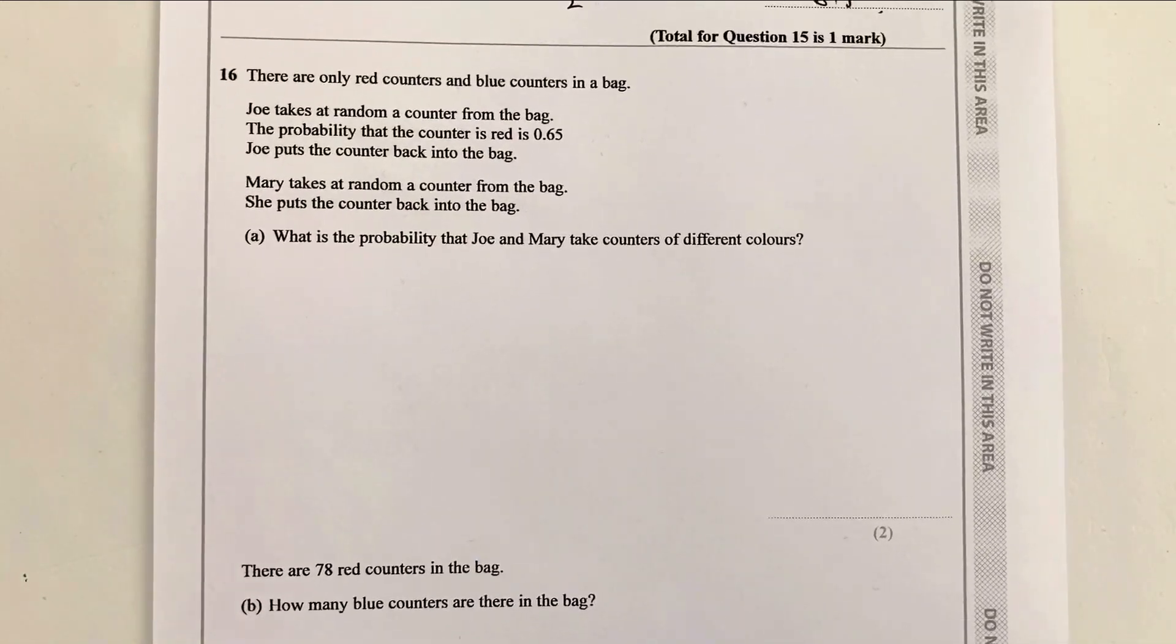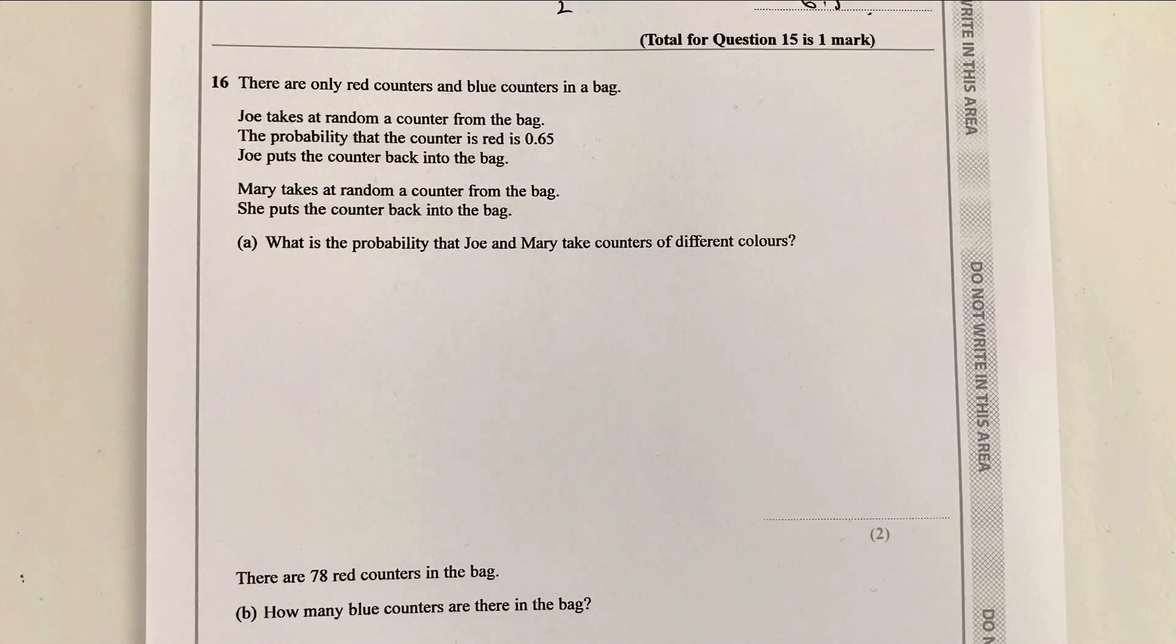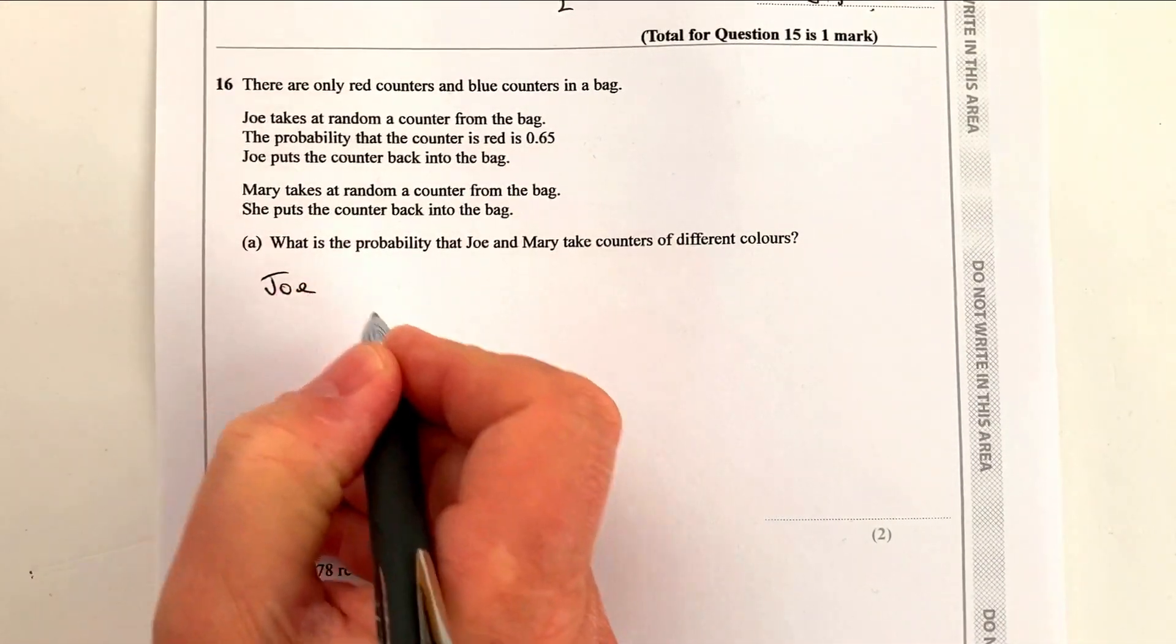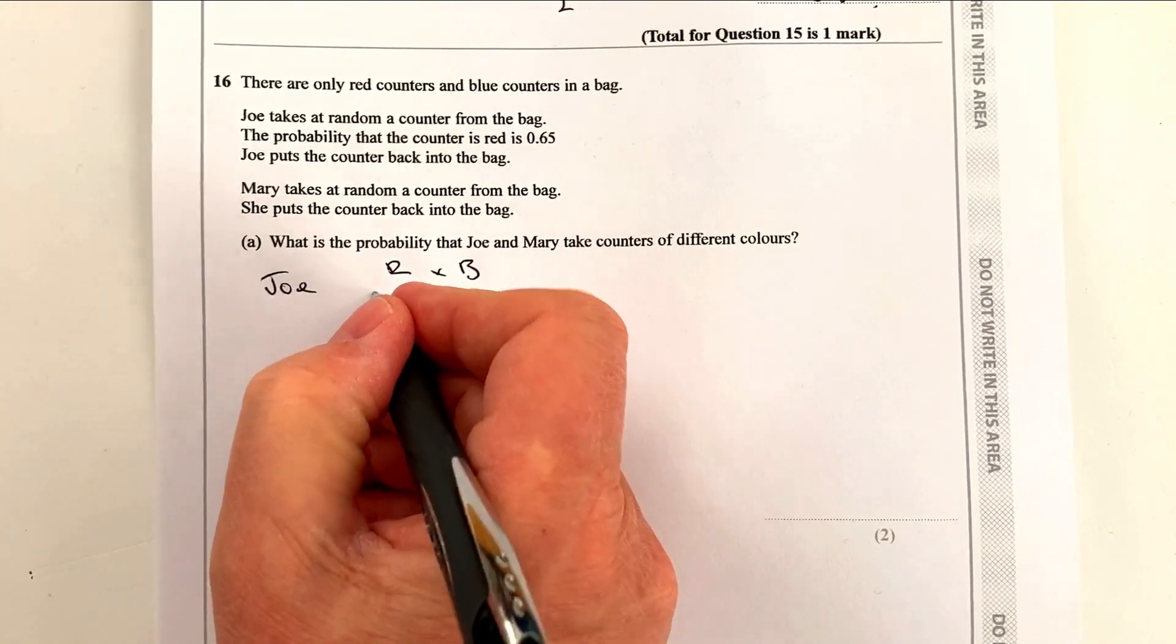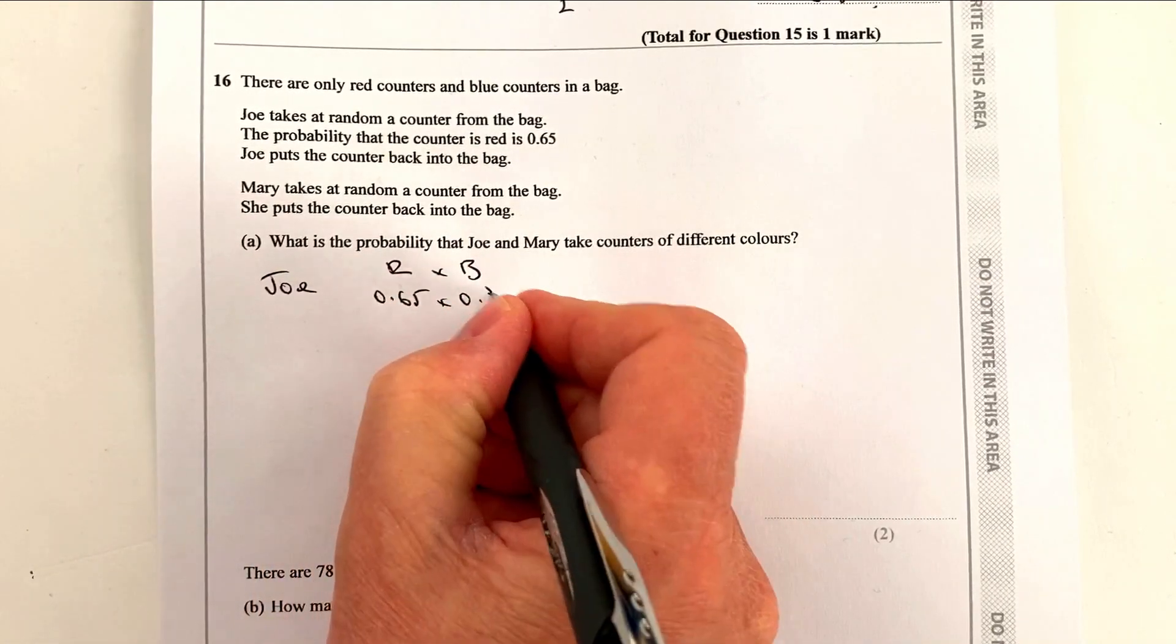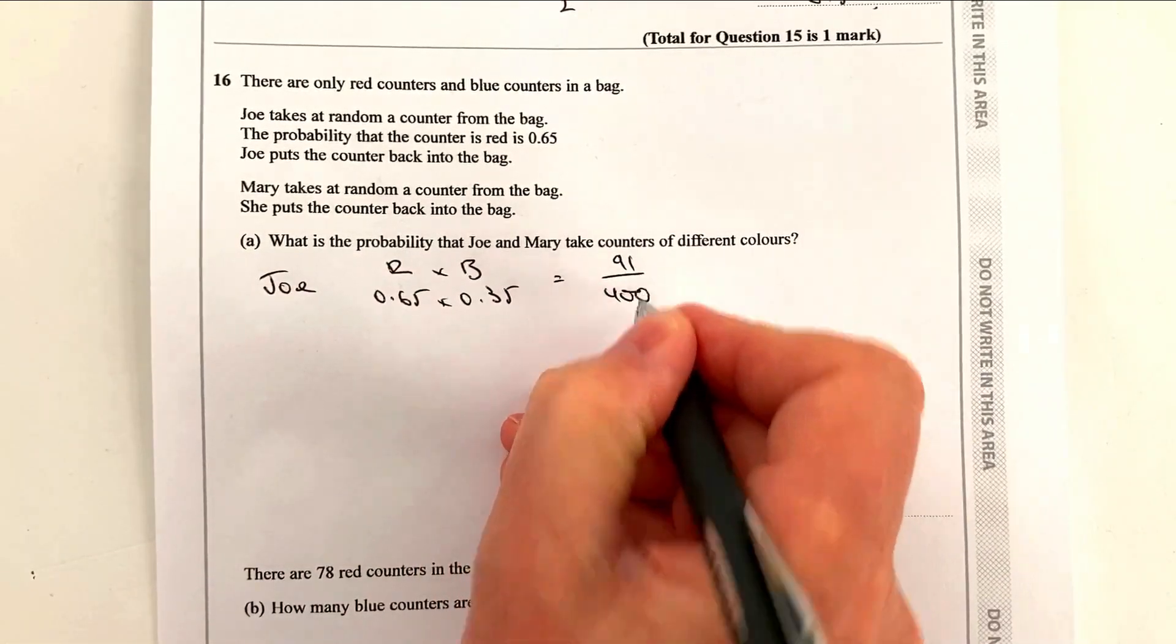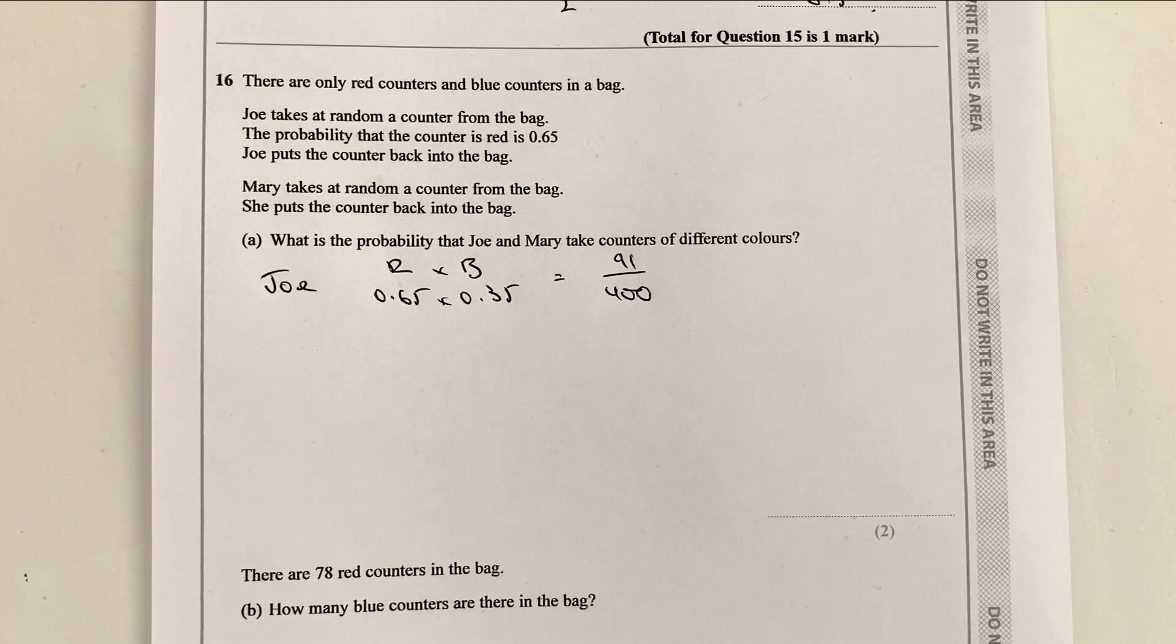Let's move on then to question number 16. I think this paper is quite a tricky paper, to be honest. There's a lot of very wordy questions in it. There's only red counters and blue counters in a bag. Joe takes a random counter, the probability the counter is red is 0.65. So let's just stop at that point. Because if that is the case, then the probability that Joe takes a blue counter is 0.35. So therefore, on his first pick, he's going to take probability of a red multiplied by the probability of a blue, which is going to be 0.65 multiplied by 0.35, which is going to give you 91 over 400.